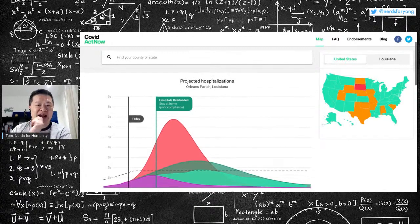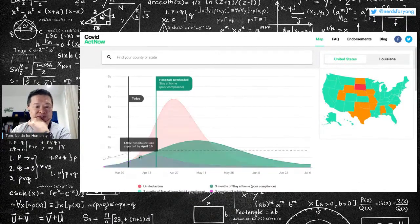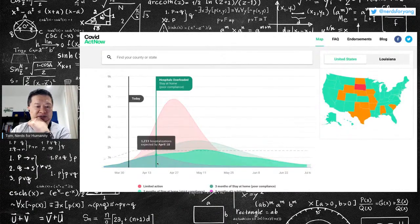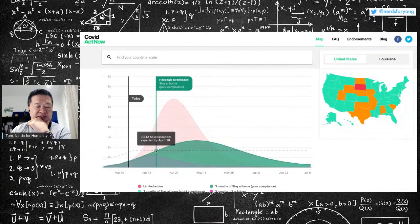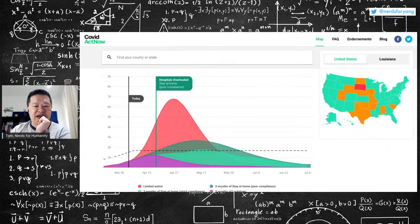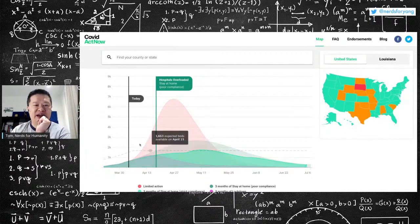Okay, Orleans Parish, Louisiana, even if they do the stay-at-home, if they have poor compliance, they will run out of hospital capacity in about two and a half weeks. And if they have good compliance, they'll just hit full capacity by middle of May.